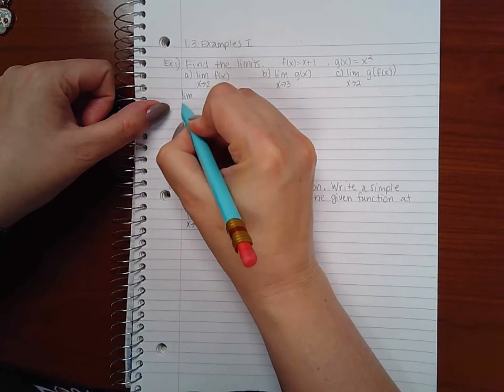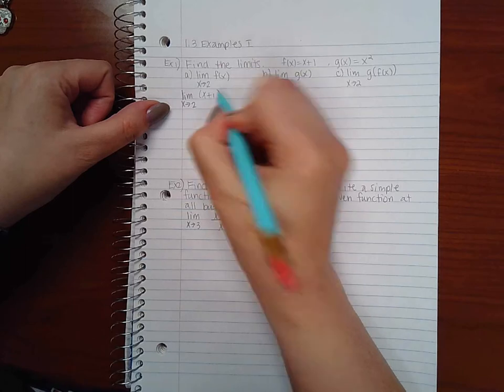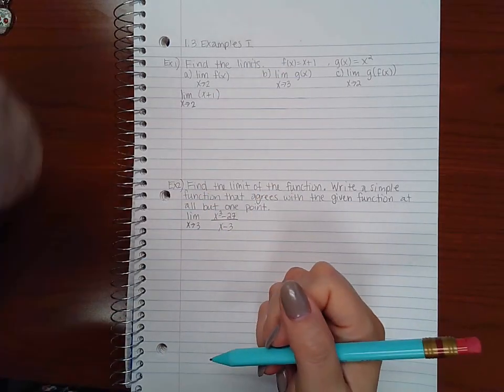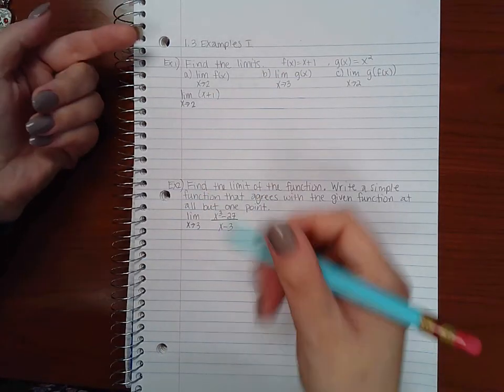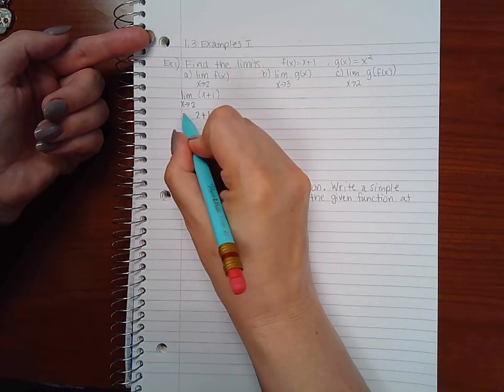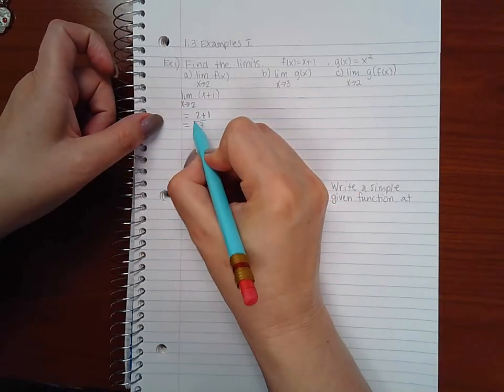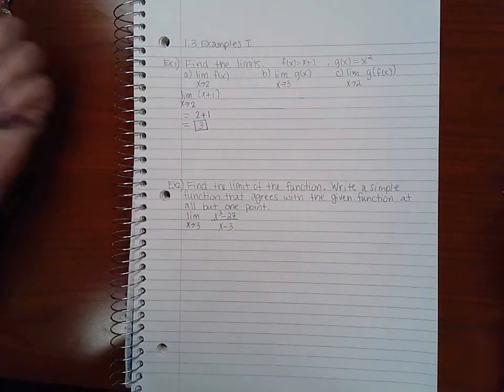The first problem says find the limit as x approaches two of f. That means I will be finding this limit and the strategy says to first try direct substitution. If I substitute two into my function I get two plus one which is three, so therefore direct substitution works and my limit is three.